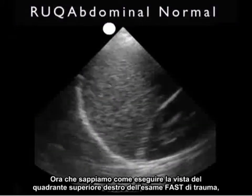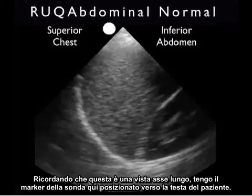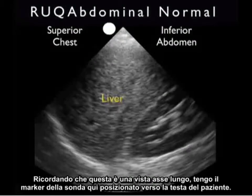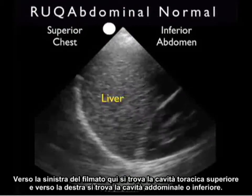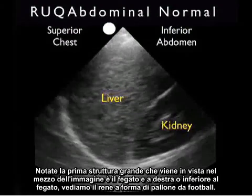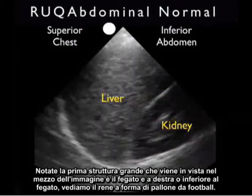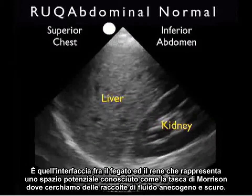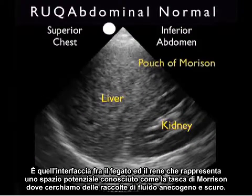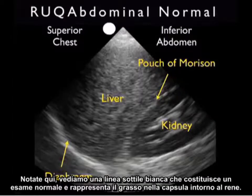Now that we know how to perform the right upper quadrant view of the trauma fast exam, let's take a look at a normal image that you might obtain. Remembering that this is a long axis view, I have the probe marker here positioned towards the patient's head. So towards the left of the clip here is superior or chest cavity, and towards the right is inferior or abdominal cavity. Notice the first large structure that comes into view in the middle of the image is the liver, and to the right, or inferior to the liver, we see the football-shaped kidney. Now it's that interface between the liver and kidney that represents a potential space known as Morrison's pouch, where we'll be looking for dark, anechoic fluid collections. Note here, we see a thin white line making up a normal exam and representing the fat within the capsule around the kidney.